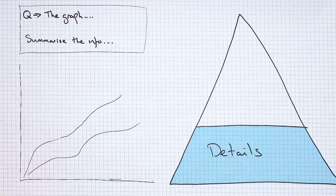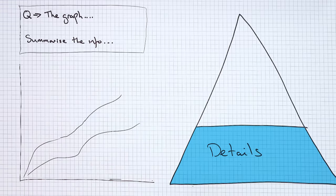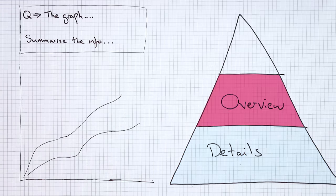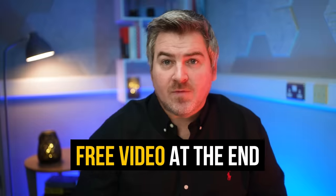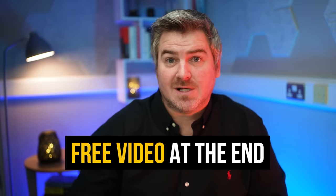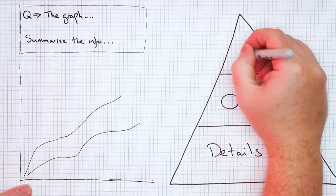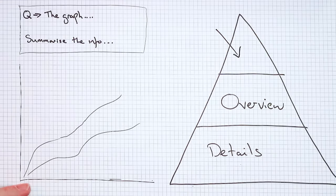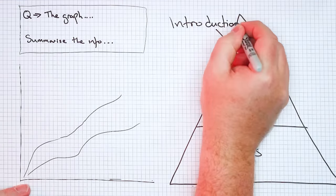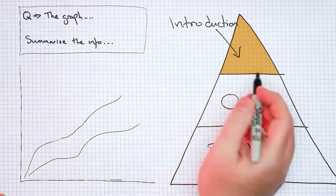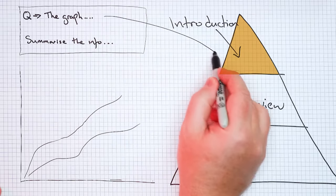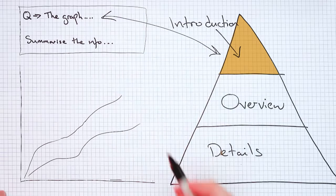Here we have details paragraphs, where you will describe the details of the graph or the map or the process in more detail. Here you'll have an overview paragraph, and if you want more information on how to write those, I'll give you another free video at the end. But what we're going to focus on today is very important, which is your introduction. How you write your introduction is you take the question and you paraphrase it. Paraphrasing just means that you write it so that it means the same thing, but you use different words.